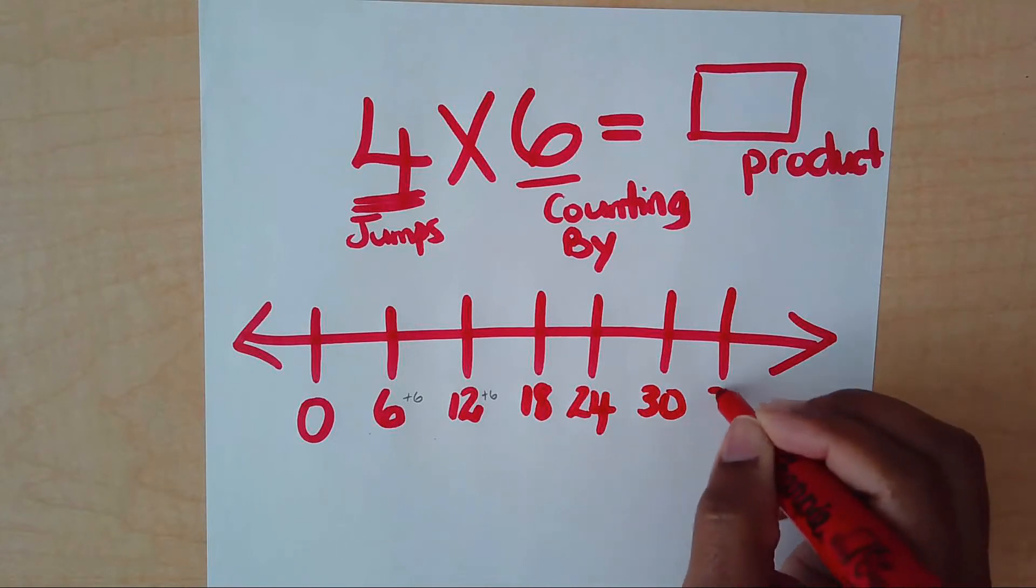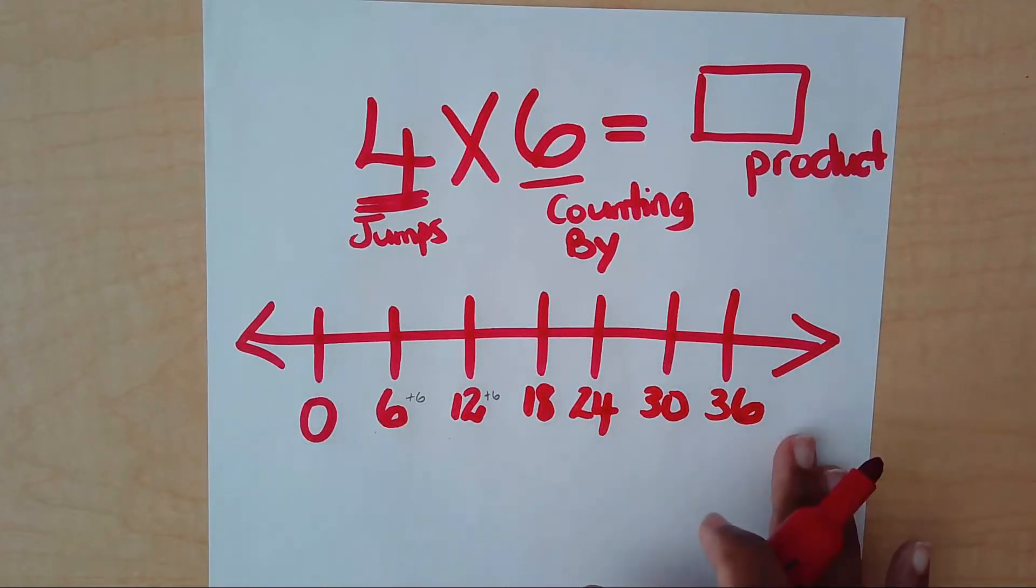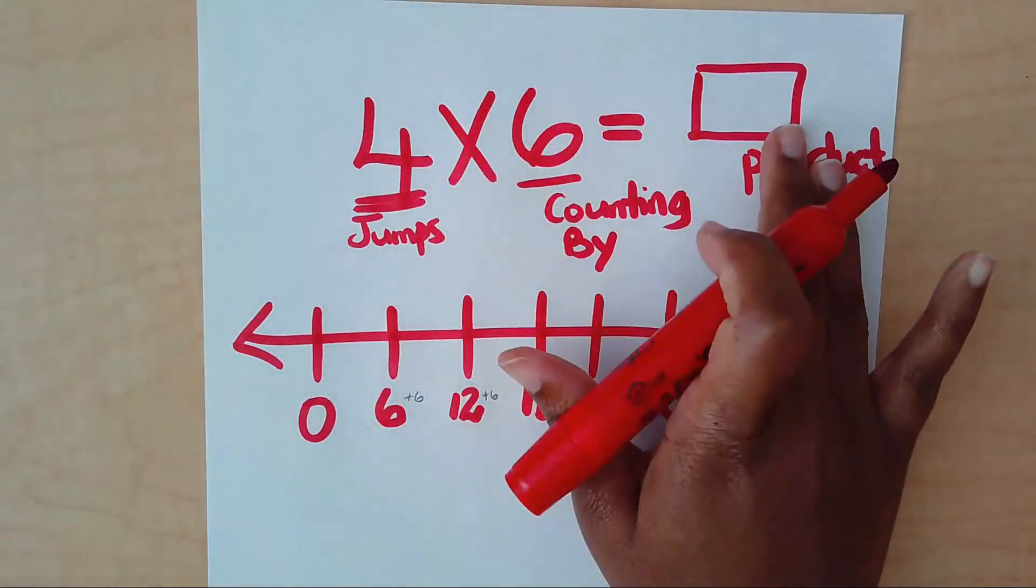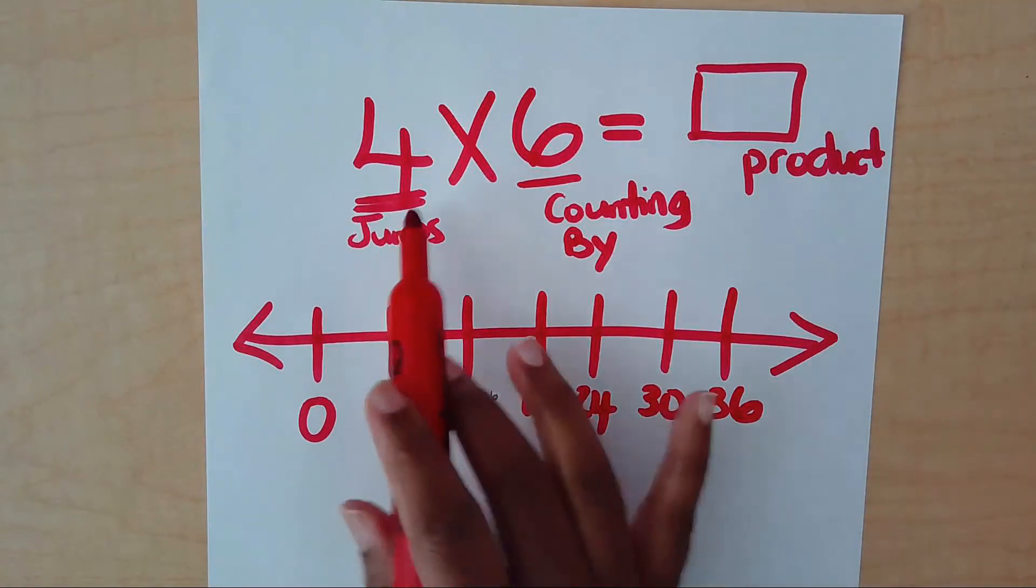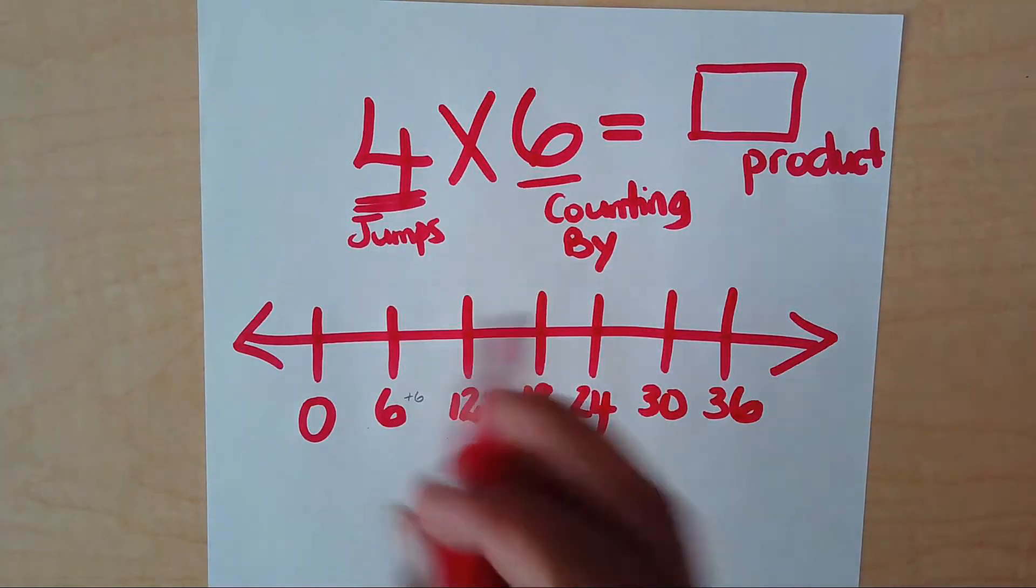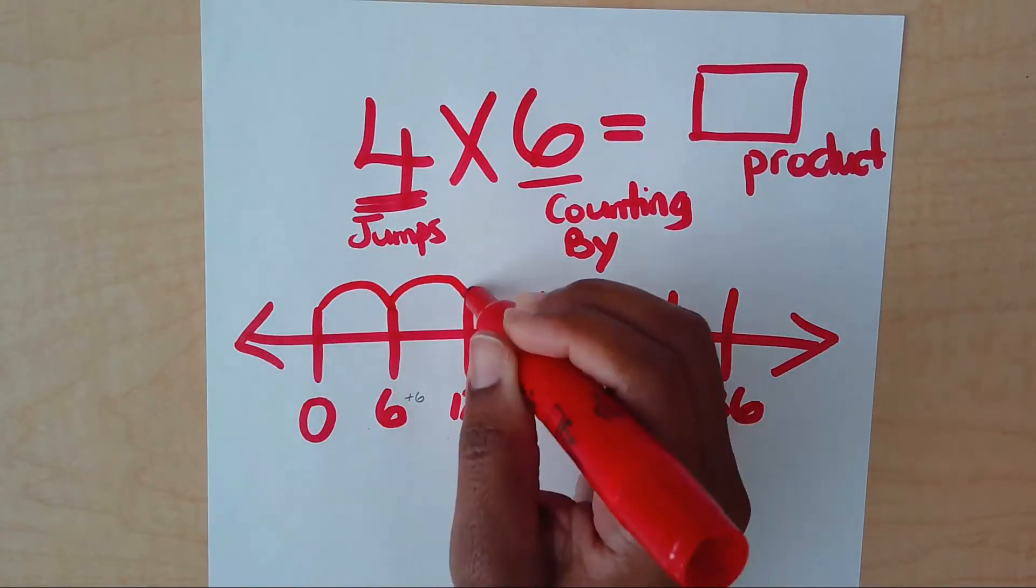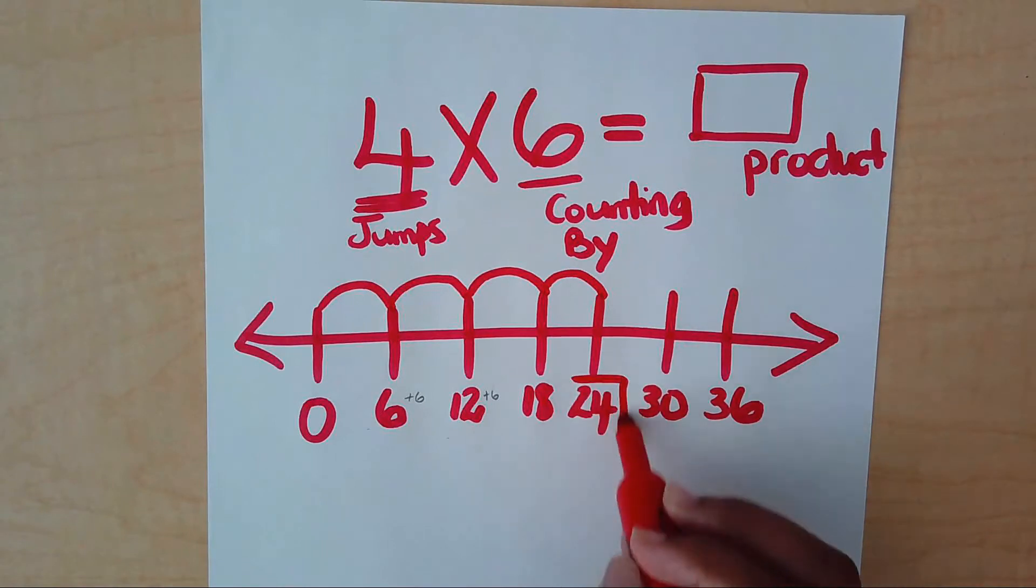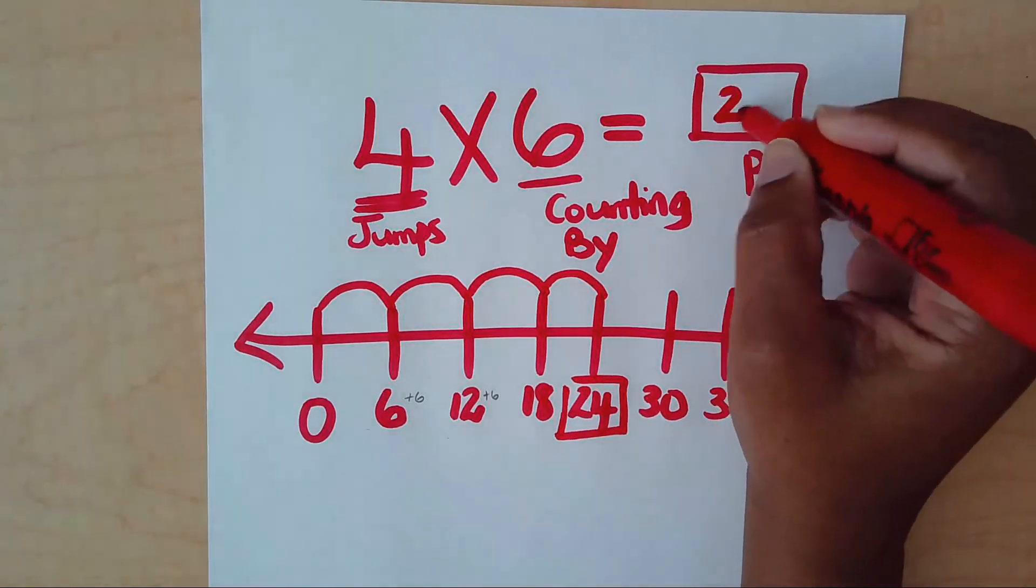Now that I've done my number line, now it is time for me to jump so that I can get to my product. So according to this, I need four jumps. It's four jumps of six. So I'm going to jump one, two, three, four. I've landed on 24. See, I've put a square around this. That means this is the product. 24 goes here.